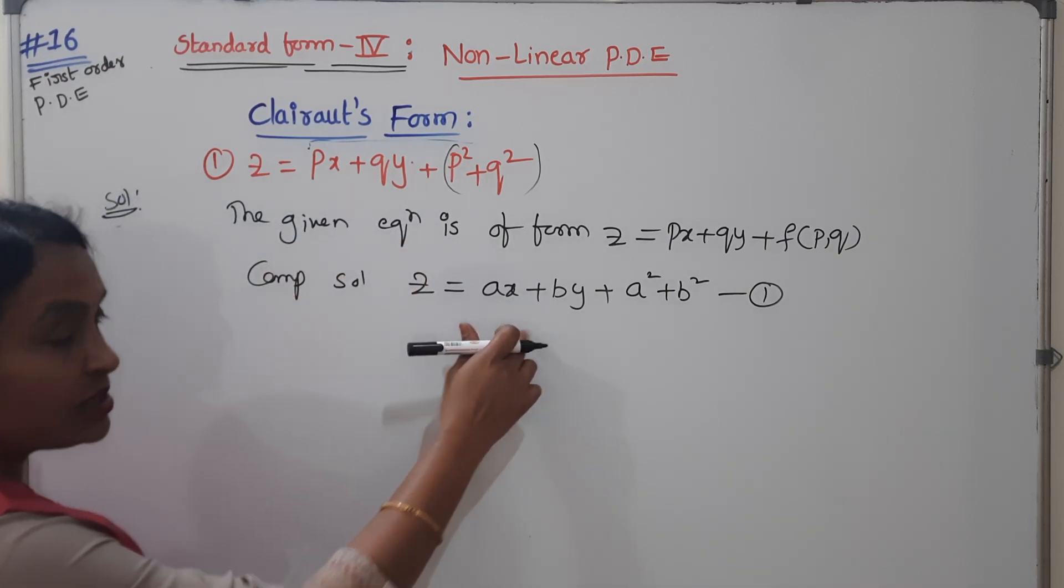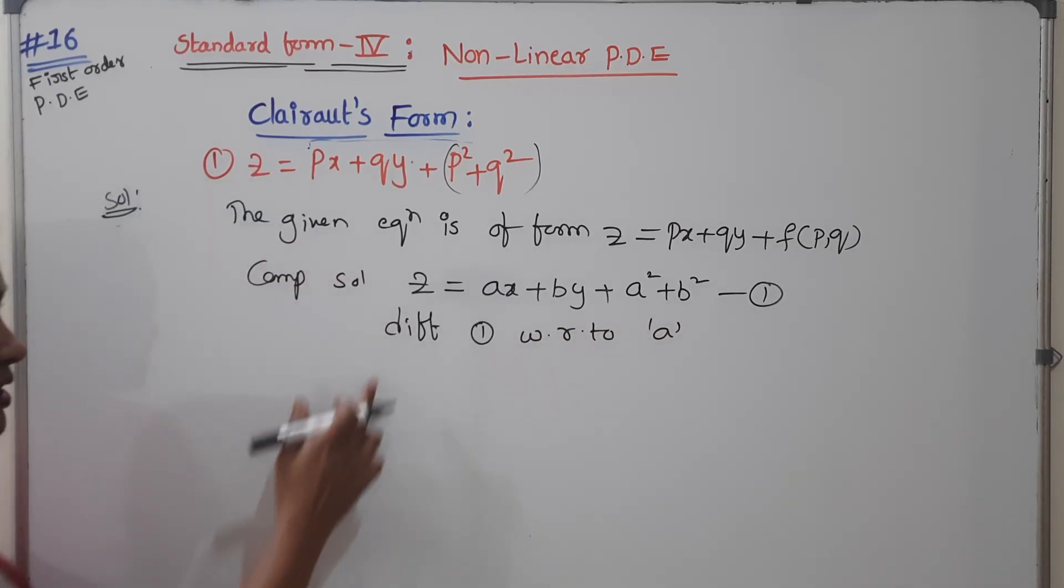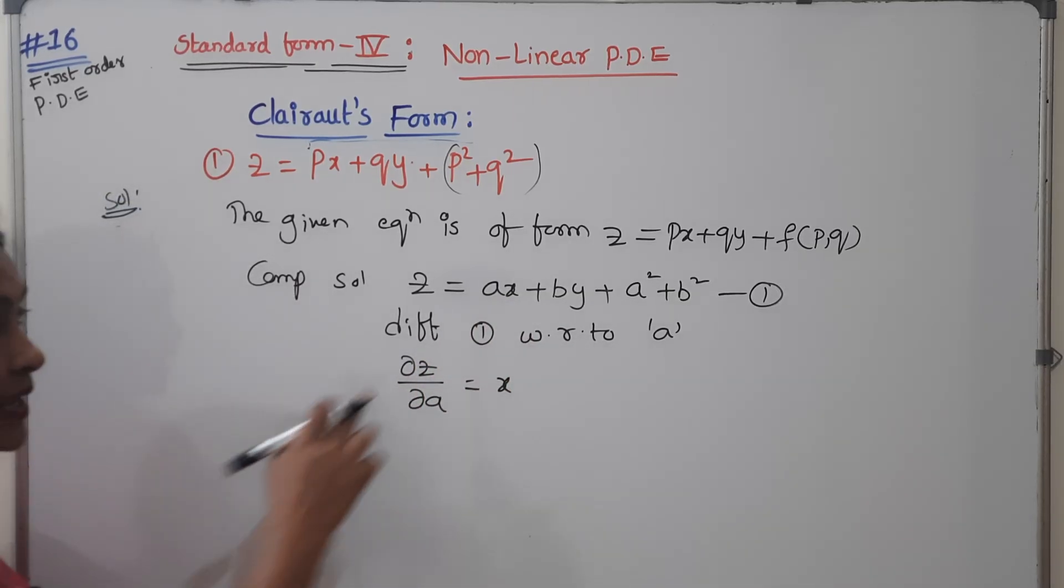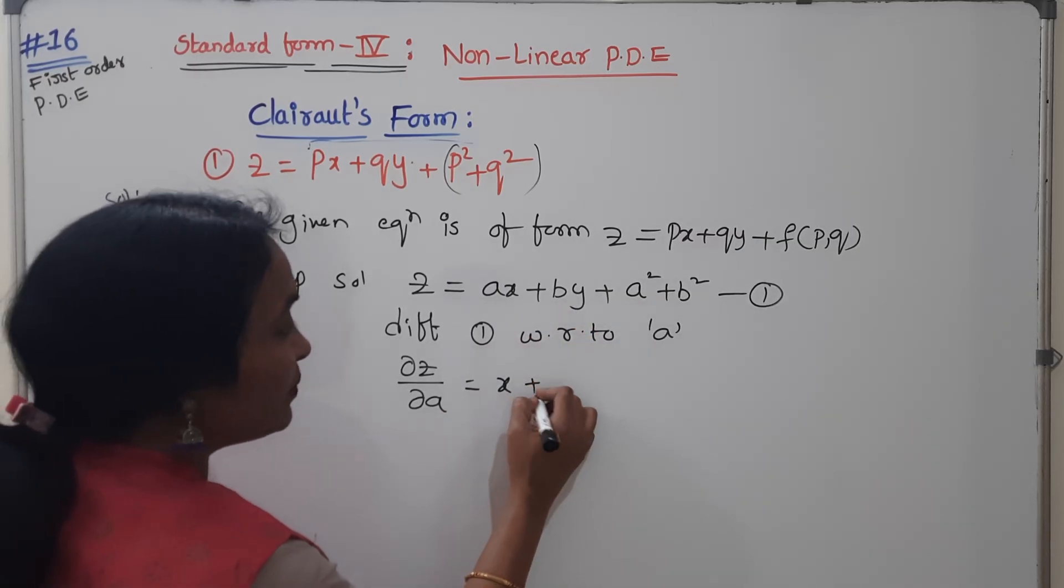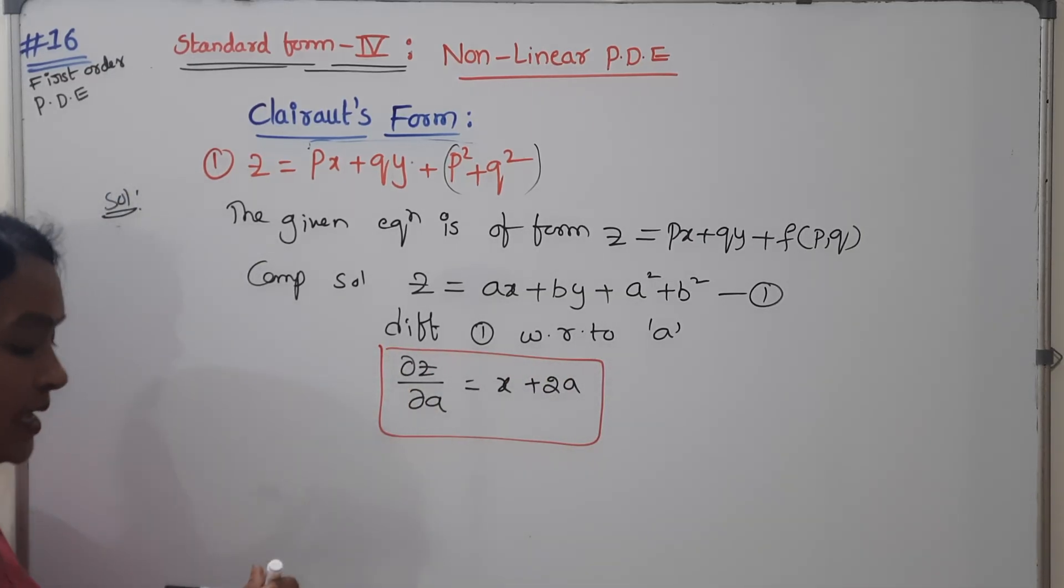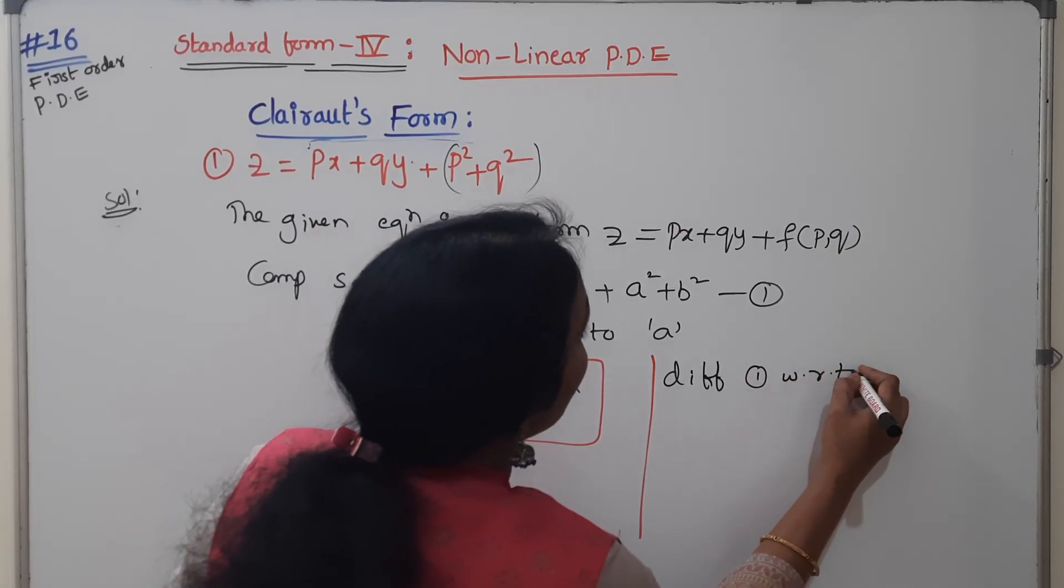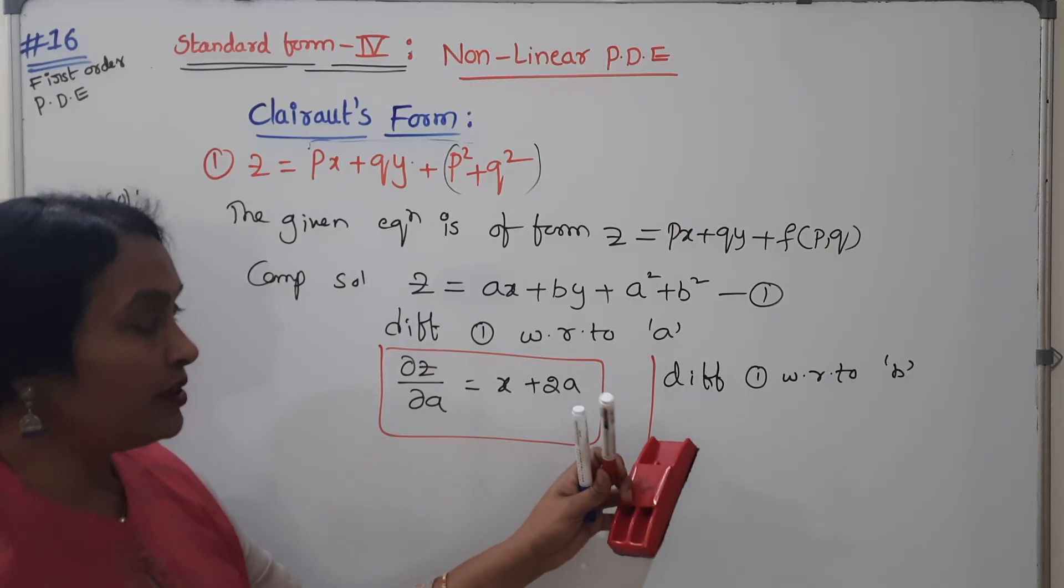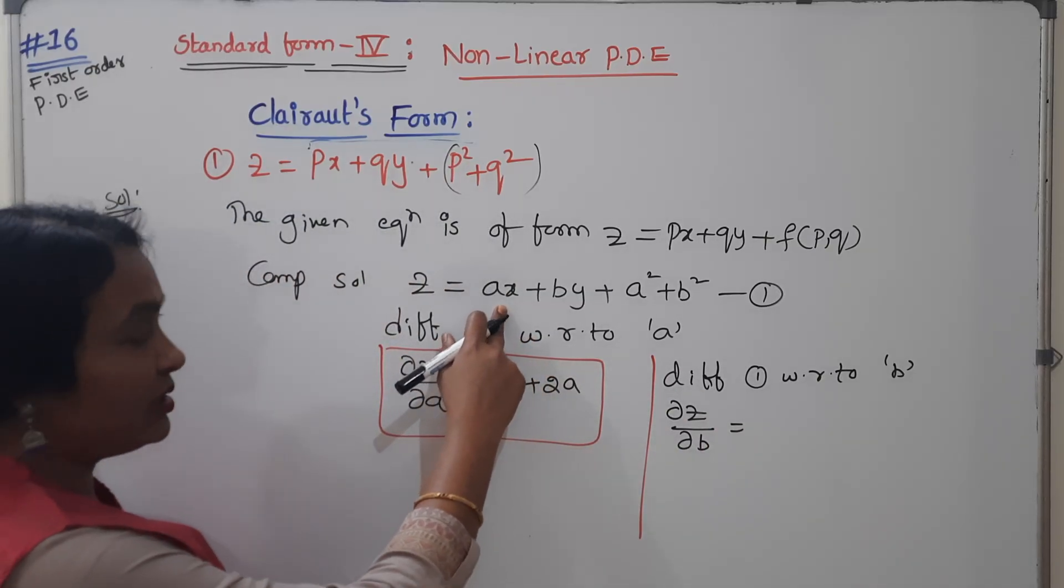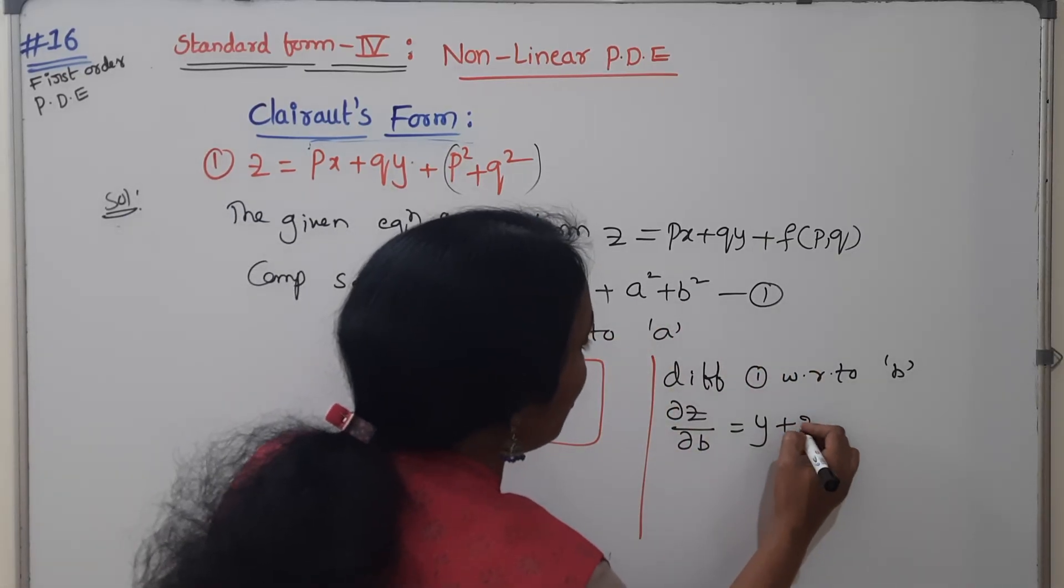Now differentiate this one with respect to A once. If you differentiate with respect to A, there is no A in the X term, this will become zero. Here A square becomes 2A. With respect to B, if you do the differentiation, there is no B in our first term, this will become zero. Here B, the differentiation is Y. A square is zero. B square is 2B. Done.